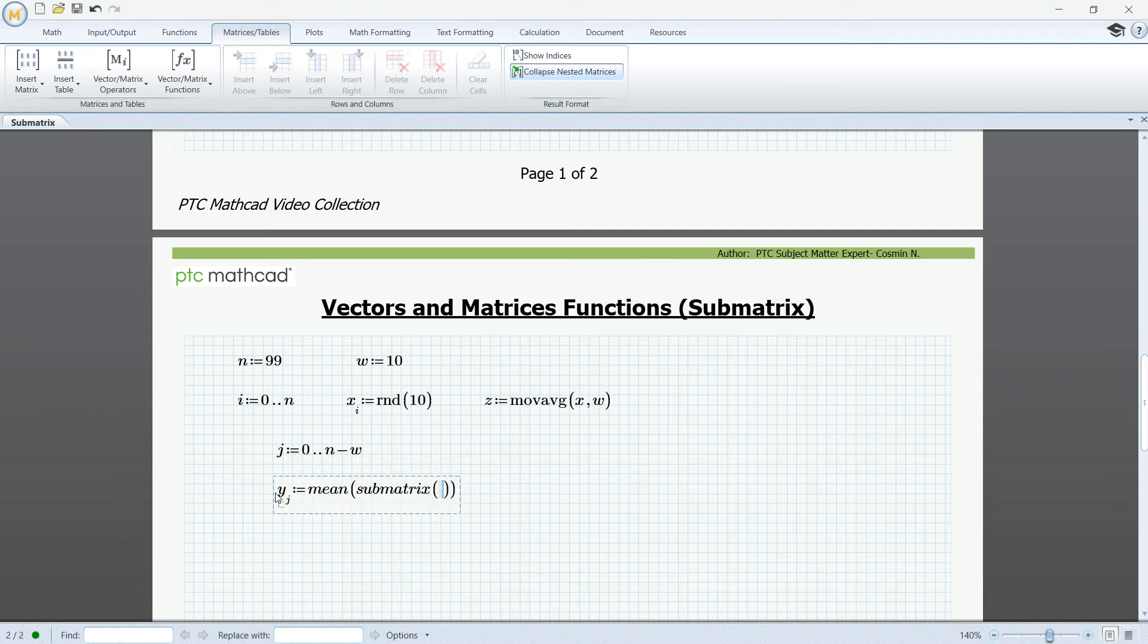And for the submatrix arguments I'm going to pass in vector of x values, and for the rows and columns I'm going to put in starting from j up to j plus w minus 1, and for the columns we're just going to put in 0 and 0 because we're dealing with a vector of values.